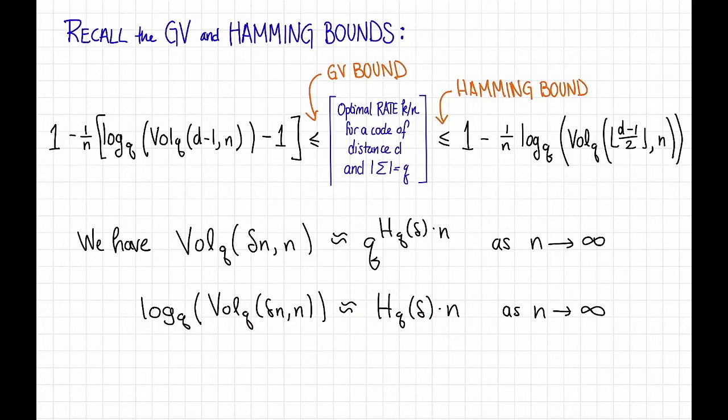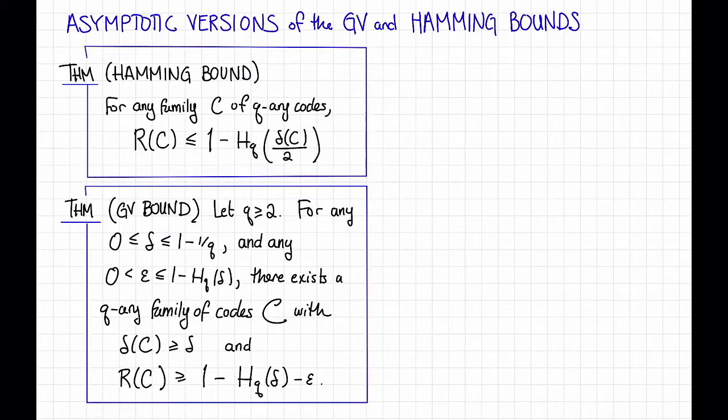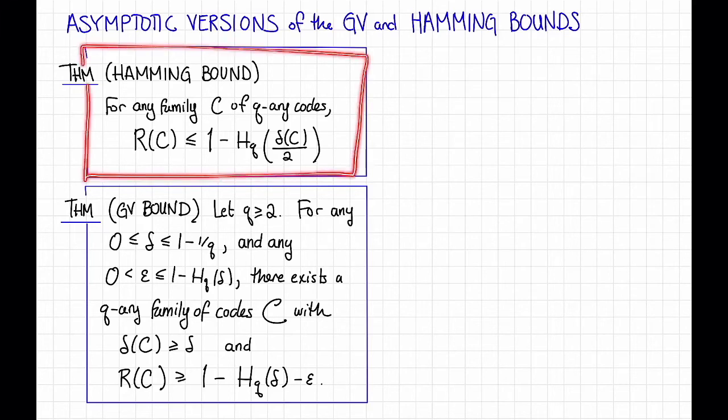So let's plug this in to these bounds and see what we get. It turns out that this is what we get. So here's what the Hamming bound looks like. It says that for any family C of q-ary codes, the rate of C is bounded above by 1 - H_q(δ(C)/2). I'm not going to go through the details of how we get this, but basically it follows just by plugging in that approximation into the non-asymptotic form of the Hamming bound that we had before. It's a good idea to pause the video now and check that this is indeed legit.